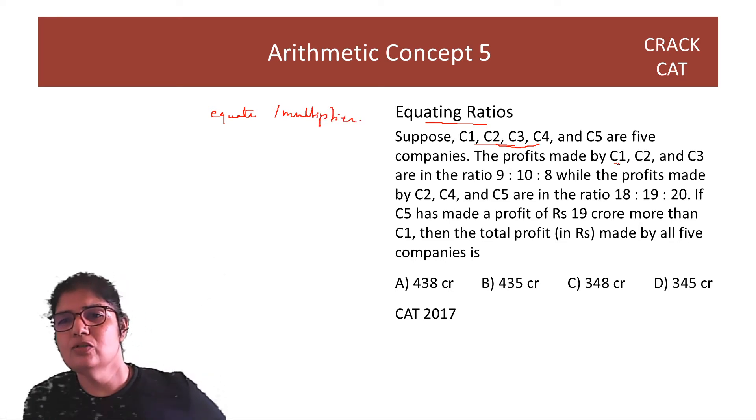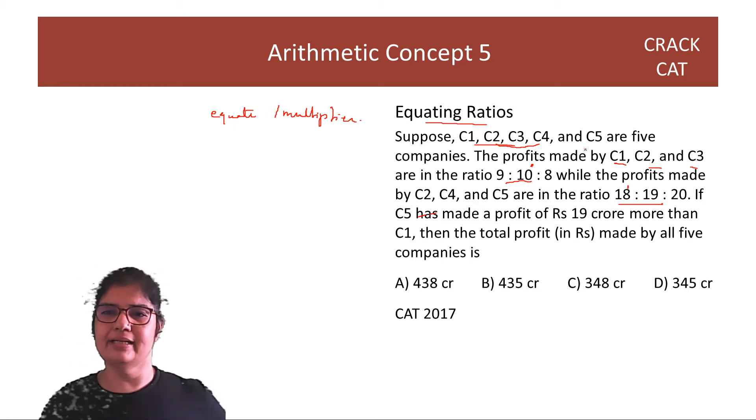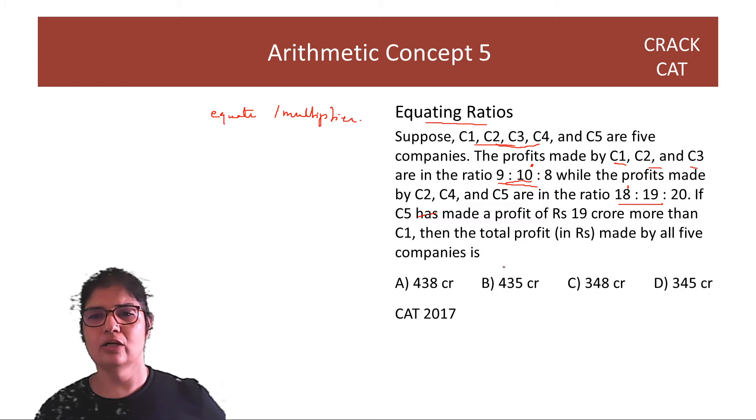C1, C2, C3 are in this ratio. C2, C4, C5 are in this ratio. Toh C2 common hai, usko humein same karna hai. Toh yaha pe 10 hai, yaha pe 18 hai. So iska LCM, 10 and 18 ka is 90. Multiply this with 9. So you get 81, 90 and 72 and multiply this with 5 and you get 90, 95 and 100. So equate ho gaya, sab ho gaya. Now we have to find the multiplier.